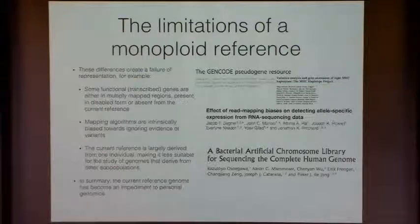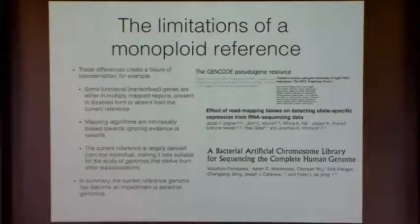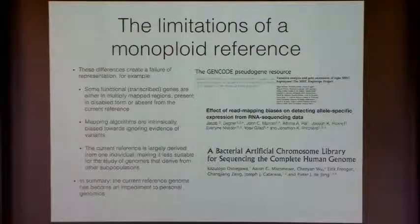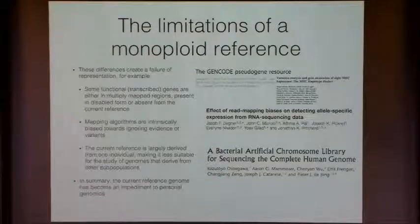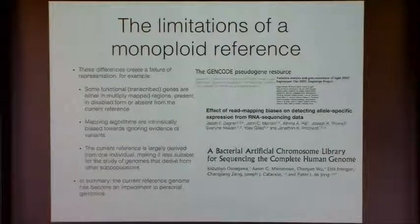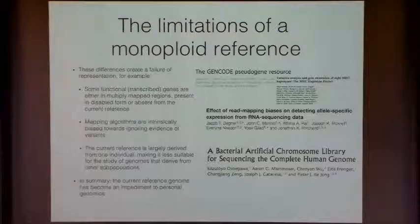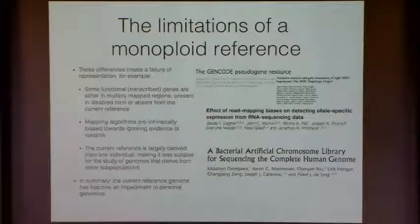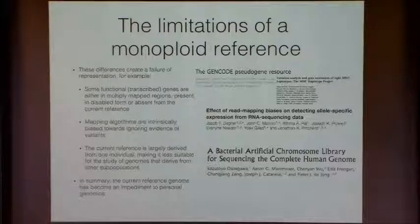The effects we hope to address include the multi-mapping problem even on functional transcribed genes. Some are broken in the reference because it's only representing one version, which happens to be a broken version, and some are completely absent. It's a mistake to think we don't need to think about these complex regions of the human genome — they do contain important information. As we start to understand human genetic variation and look at subpopulations that others have been talking about, we need a way to capture that variation as well, in the sense that it is specific to a subpopulation.